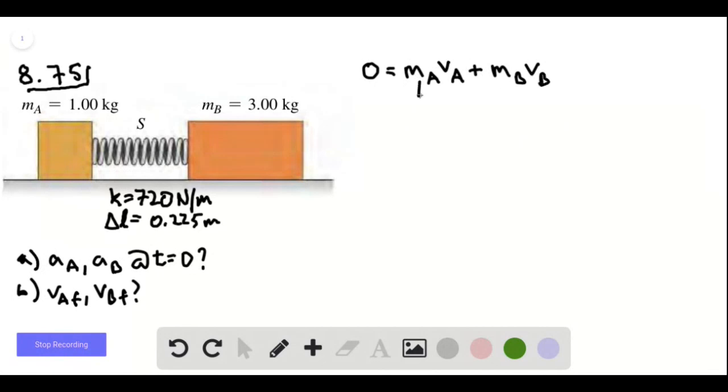And so for brevity, we can just call this m and we know that this is 3m. So mva will always be equal to negative 3mvb.